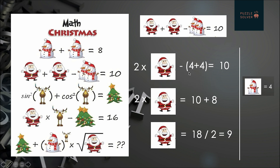In the second equation we have two Santas minus two snowmen is equal to ten. We know the value of snowman from our first equation, that is equal to four. Putting that value in and solving: 2 × Santa − (4 + 4) = 10, so 2 × Santa − 8 = 10. Taking eight to the right-hand side: 2 × Santa = 10 + 8.